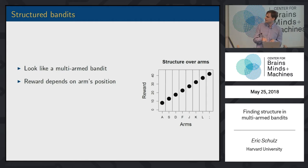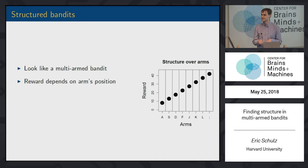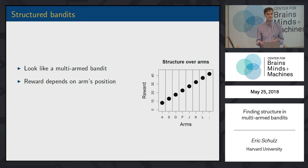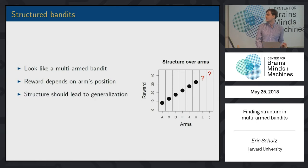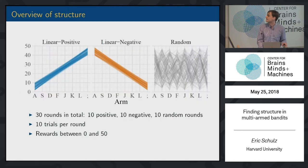The trick is that actually the underlying reward is spatially correlated. For example, there could be a linear function. So if you sample the left arm, you could get 10, then 15 on the next arm, and so on. And you could actually jump right to the end, because there's an underlying function. Participants do not know this, but they might pick up on it, and if they do and manage to generalize, that should improve their behavior quite a bit.